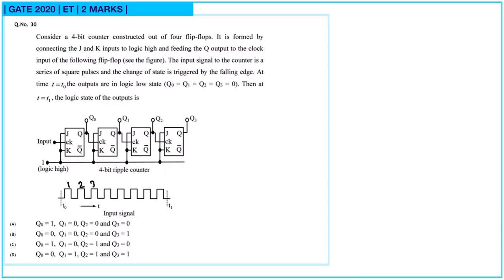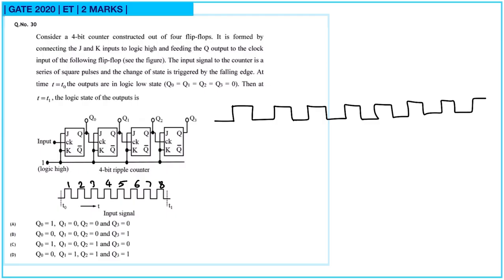Eight clock pulses are given from t0 to t1. Initially Q0, Q1, Q2, and Q3 are all 0. Each flip-flop changes state on the negative (falling) edge. So Q0 toggles on each falling edge of the input clock, going high then low alternately.